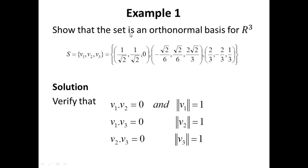Example 1: Show that the set S is an orthonormal basis for R3. First, we show that S is an orthonormal set, then use knowledge from Chapter 4 to conclude that S is a basis for R3. S has three vectors that do not lie on the same plane, so these three vectors span R3. Since these vectors span R3 and the dimension of S is three, we conclude that S is a basis for R3. The key question is to verify that S is an orthonormal set — we must show that all vectors are pairwise orthogonal and the norm of each individual vector is one.